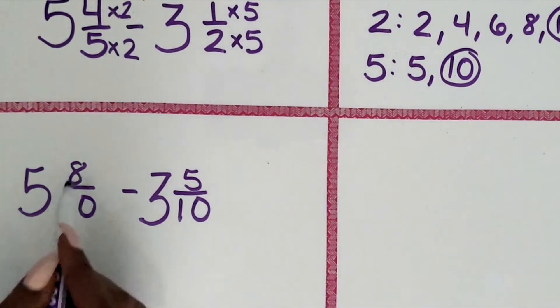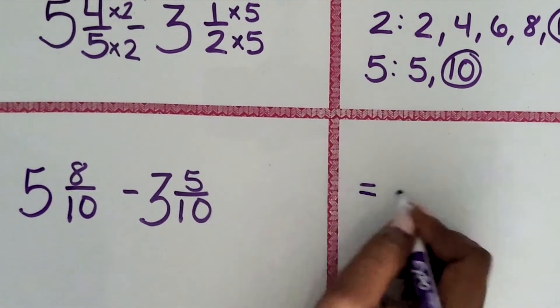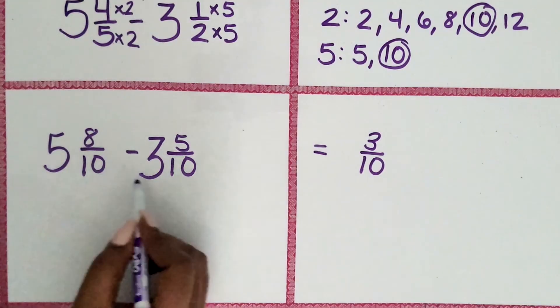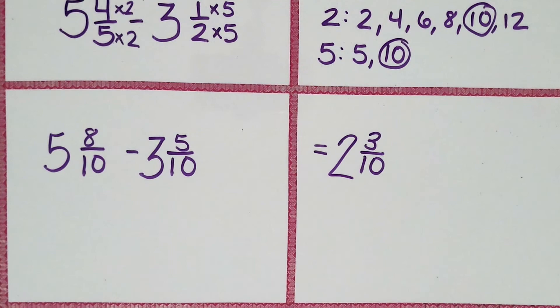Now we have 5 and 8 tenths minus 3 and 5 tenths. So let's do the fractions first. 8 tenths minus 5 tenths is 3 tenths, and 5 minus 3 is 2. So our difference is 2 and 3 tenths.